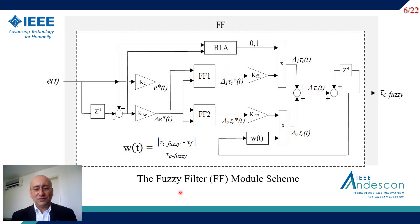The fossil filter module consists of two fossil inference systems: FF1, designed to increase the closed-loop time constant when required,